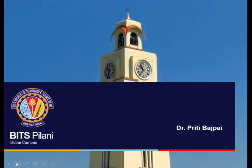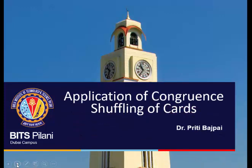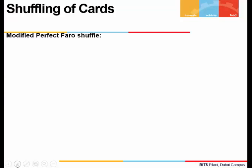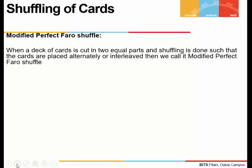Hi guys, here we are going to study one of the applications of congruence: shuffling of cards. Shuffling of cards is not new to us, but what if we do it in an organized way? If we are given a deck of even number of cards, we divide it into two and shuffle such that the cards are interleaved or placed alternately. We call such a shuffling a modified perfect faro shuffle.